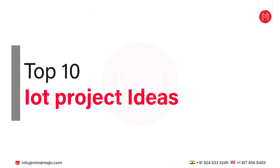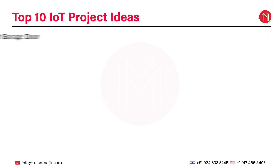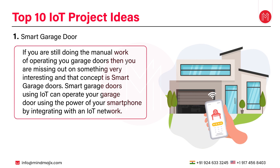The first project you can implement with IoT is a smart garage door. If you are still doing the manual work of operating your garage doors, then you are missing out on smart garage doors. Smart garage doors using IoT can operate your garage door using the power of your smartphone by integrating with an IoT network. With such doors you no longer have to manually lock the door. The system uses laser and voice commands along with smart notifications for a better monitoring experience. You can add IFTTT integration to create custom commands for Google Assistant, and a Flask web server is used along with Raspberry Pi to control the garage door.